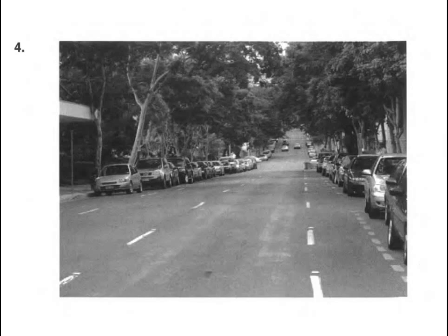Number 4: Look at the picture marked number 4 in your test book. A. There are some pedestrians crossing the road. B. There are trees on both sides of the road. C. The road is jammed with traffic. D. Cars are parked on only one side of the road.